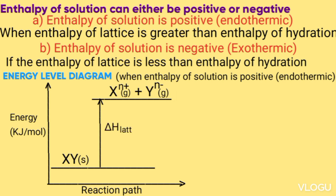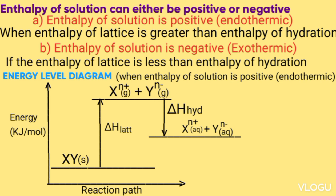Because the enthalpy of lattice is bigger than the enthalpy of hydration, the arrow goes down for the hydration energy since it is negative. From X⁺ (gas) plus Y⁻ (gas), the arrow goes down forming X⁺ (aqueous) plus Y⁻ (aqueous). Note that the value of lattice energy must be bigger than the value of hydration energy, so the remaining arrow for enthalpy of solution goes up — from XY solid up to X⁺ (aqueous) plus Y⁻ (aqueous).